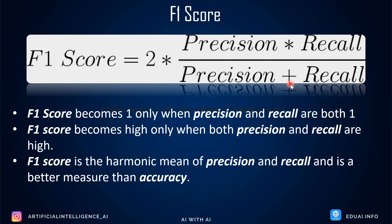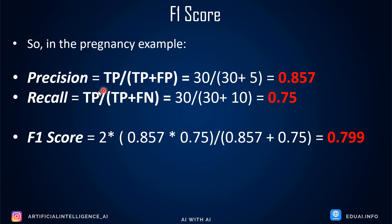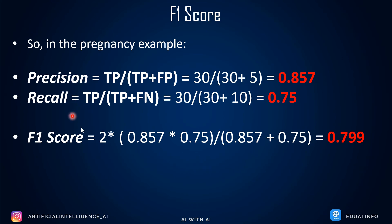Let's plug in our values. Precision = 30 / (30 + 5) ≈ 0.857 and Recall = 30 / (30 + 10) = 0.75. F1 = 2 × (0.857 × 0.75) / (0.857 + 0.75) ≈ 0.799, which is approximately 80%. So the F1 score gives us a combined, more realistic measure of model performance.